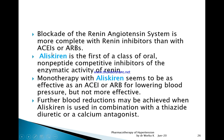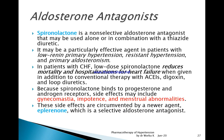The third class acting on the renin-angiotensin system is renin inhibitors, the first drug being aliskiren. Monotherapy with aliskiren seems as effective as ACE inhibitors and ARBs for lowering blood pressure, though there is no evidence it is more effective. Further blood pressure reduction may be achieved when aliskiren is used in combination with thiazide diuretics or calcium antagonists.